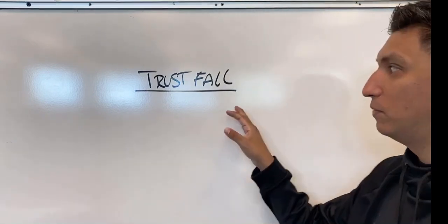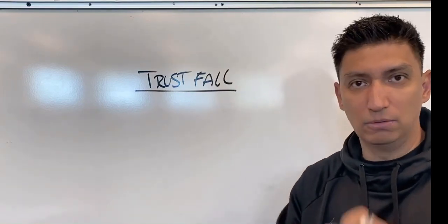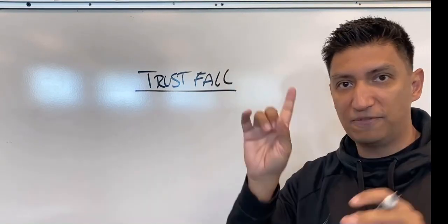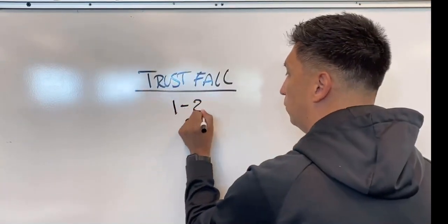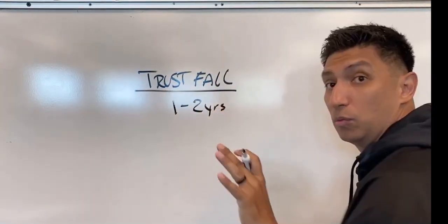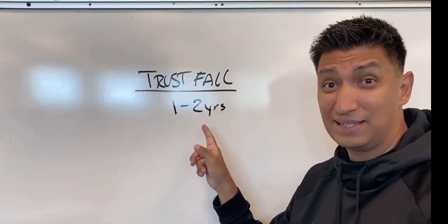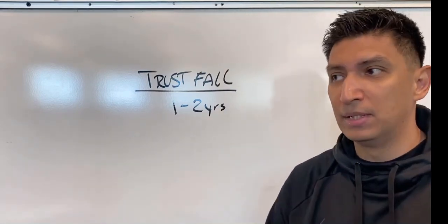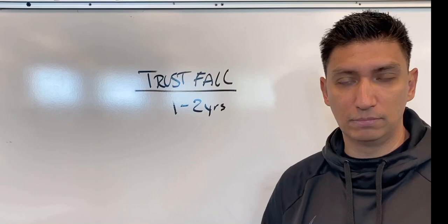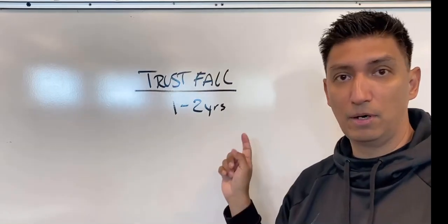So basically what that means is they catch you because they like you. So in the trust fall phase, we want to get to a point where the kids trust you and like you. That's it. That's phase one. And that should take one to two years. One to two years to get this done. If you don't have that done by the end of the second season, where the kids actually like you and are having fun and they trust you, you need to rethink how you're doing your plan.